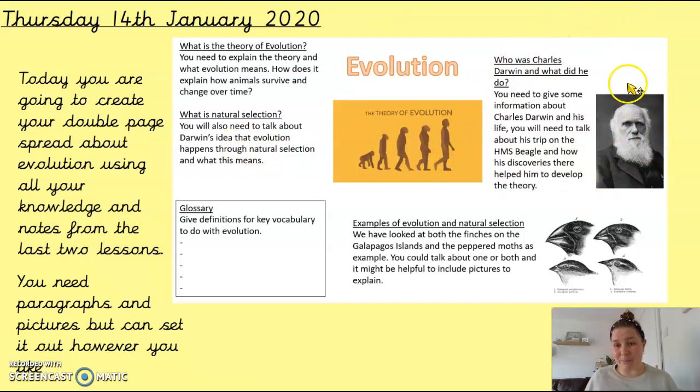You're going to need to tell us about Charles Darwin himself. What did he do? You can include as much or as little information as you want there. And then you can give some examples and we've looked at two key examples. The finches on the Galapagos Islands and the peppered moths from the book that I read yesterday. You could talk about one or both.